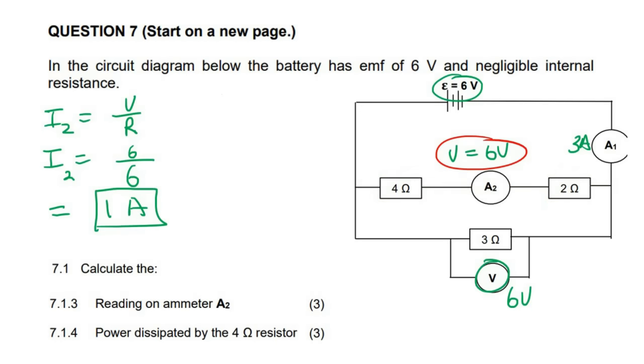So there we go. So what we now know, then, is that there's 3 amps in the main part. When that 3 amps gets to this part over here, we now know that 1 amp goes this way.